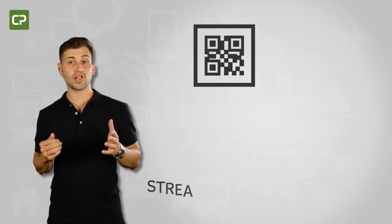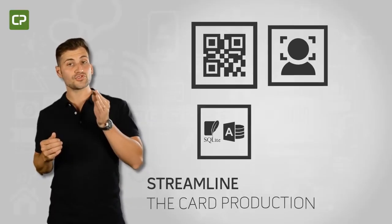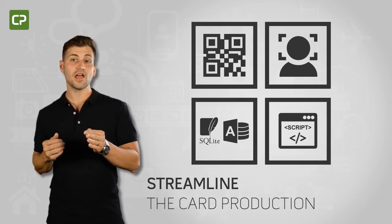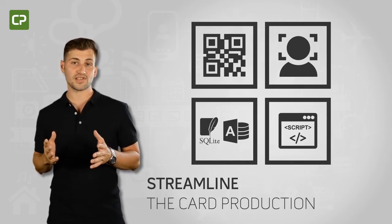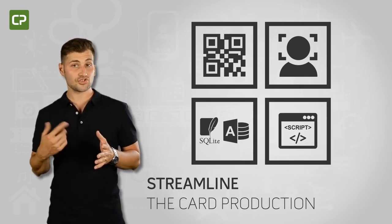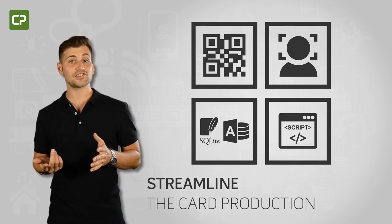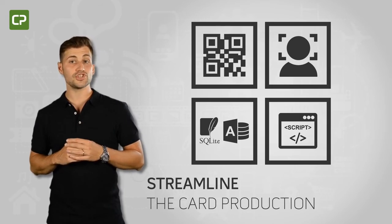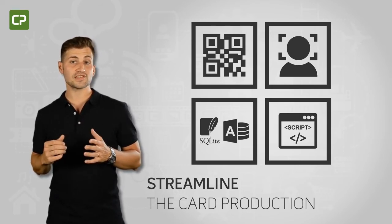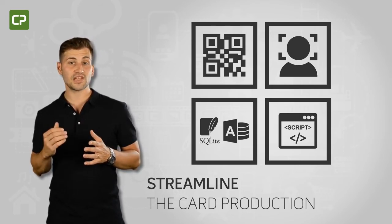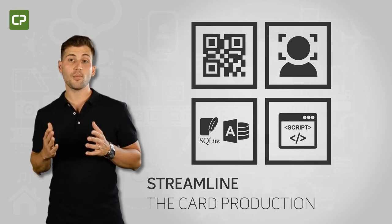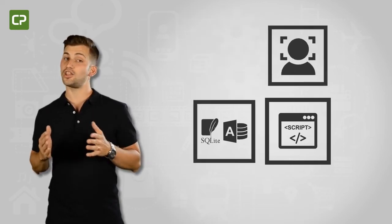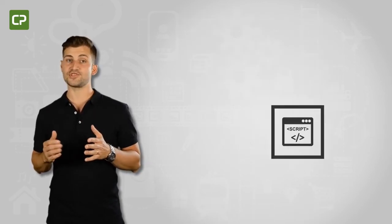XM Edition streamlines your photo ID printing needs by automating the photo editing process, connecting directly to your MS Access and SQLite database, and allowing you to personalize the card printing workflow through script. These features translate into fewer mistakes, greater efficiency, better service and security, and a lot of time saved.